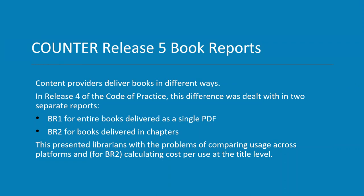As you all know, some platforms deliver books as a single PDF where all the chapters are contained within one PDF. Other platforms deliver books in chunks, by section or by chapter. This causes some difficulty. In Release 4 of the Counter Code of Practice, this difference was dealt with by two separate reports: the BR1 report, which is a report for entire books delivered as a single PDF, and the BR2 report for books delivered in chapters.